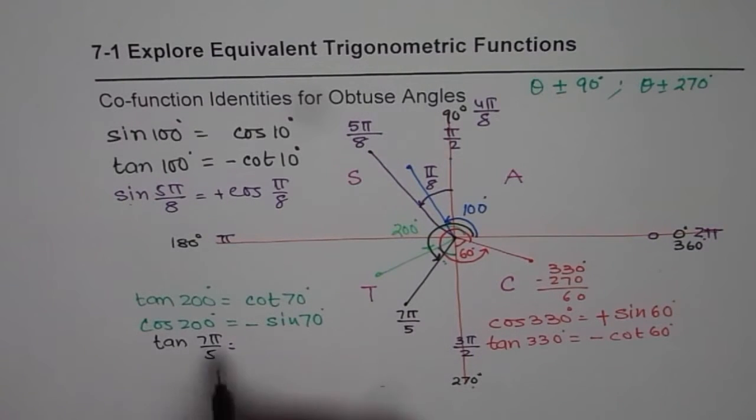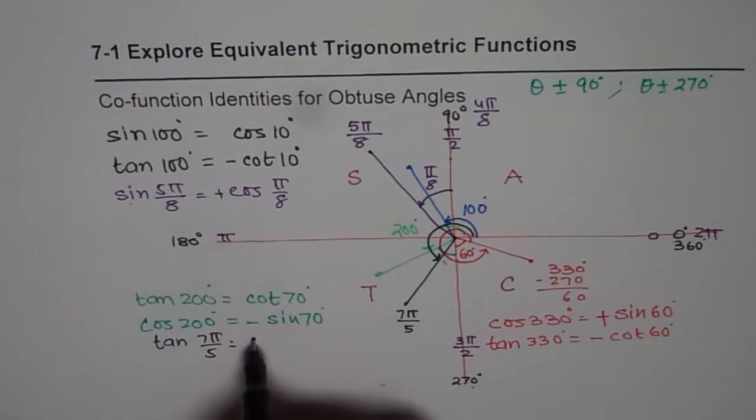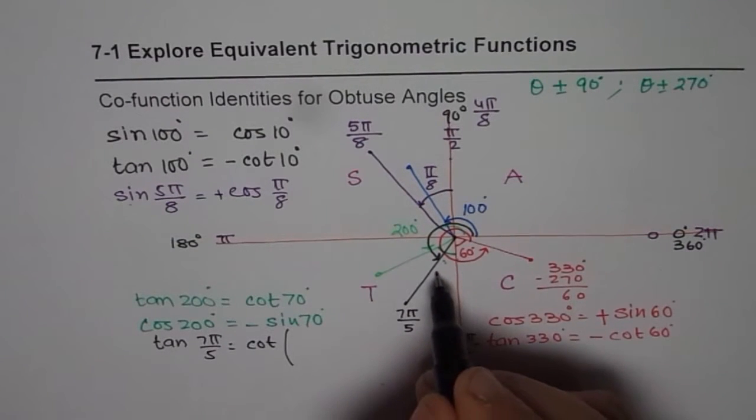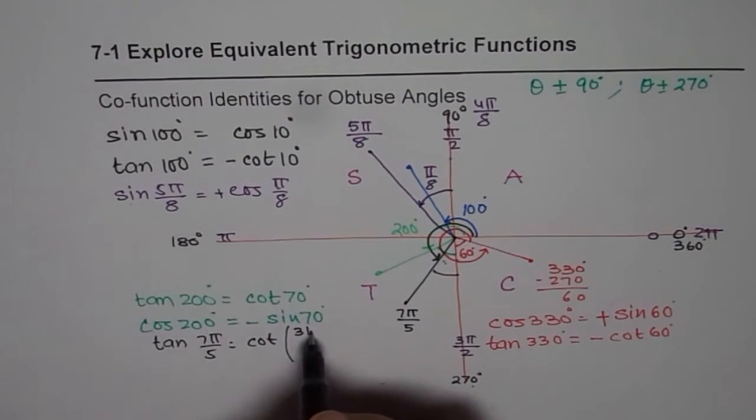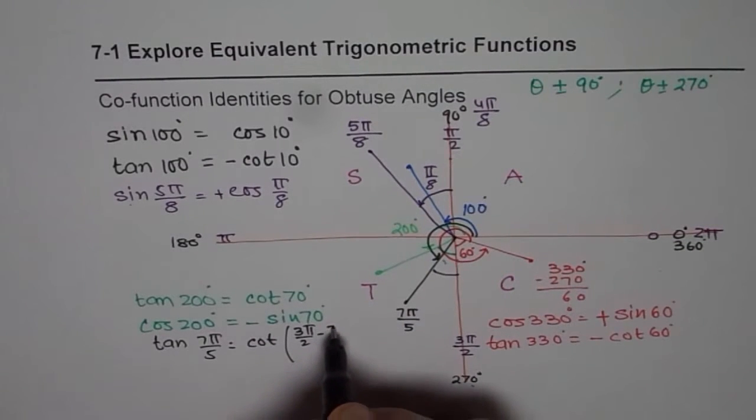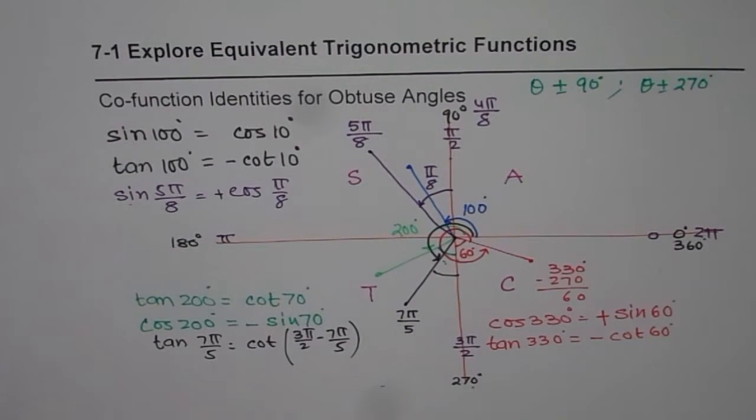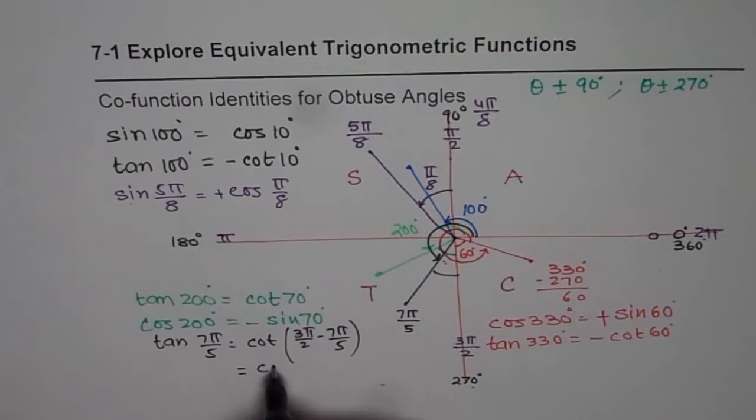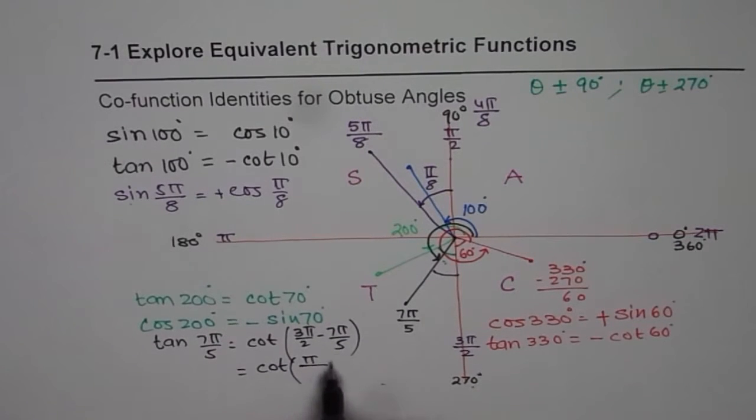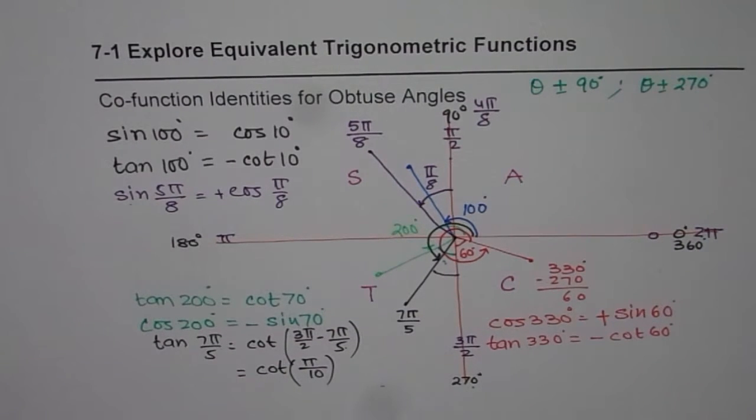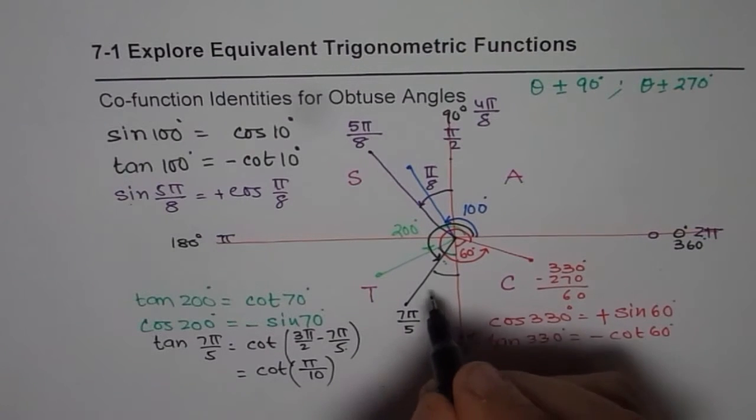Now tan is positive. So it is definitely equals to positive cot of, let us do the math this time, we have to find this angle. So this is 3 pi by 2 minus 7 pi by 5. So this is 3 pi by 2 minus 7 pi by 5. Good. So that should be equal to cot of 3 times 5 is 15, 2 times 7 is 14. So 15 minus 14 is just pi divided by 5 times 2, 10. So we get cot of pi by 10. So we get cot of pi by 10. So this angle is pi by 10.